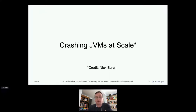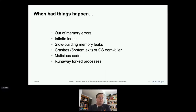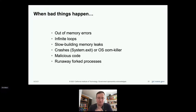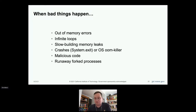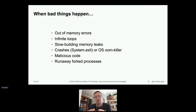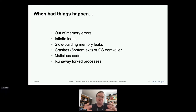Now I'll talk about crashing JVMs at scale — with credit to Nick Birch. Bad things happen: Tika can get memory errors, infinite loops, slow-building memory leaks, crashes. We had one parser that called system exit if it didn't like a particular byte. Tika can also spin up so much that the operating system's OOM killer kicks in. There can be malicious code, runaway fork processes. These don't happen often, but if you're processing billions of files from untrusted sources off the internet, things do happen.